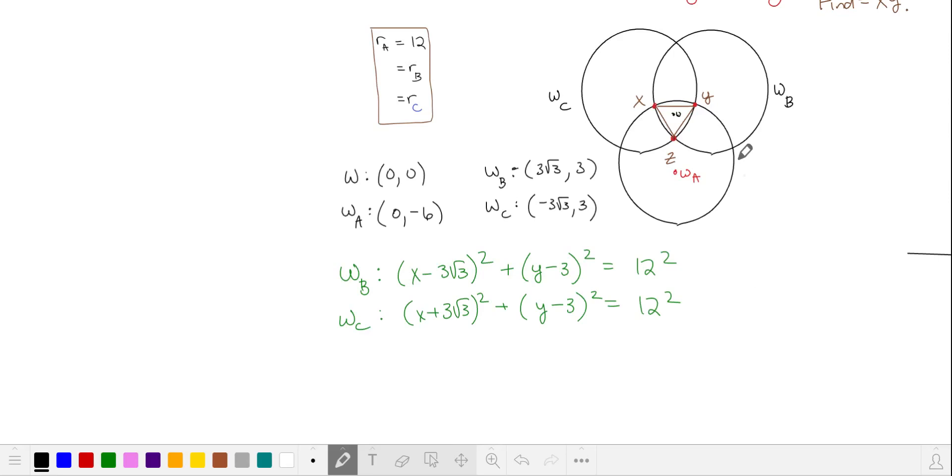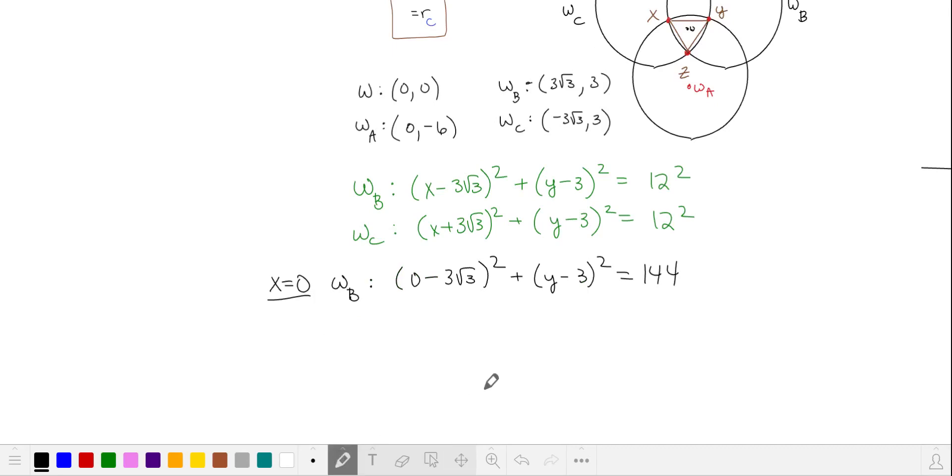We'll save ourselves a little bit of time by noting that the x-coordinate of z is also 0. So we can find the solution for these two circles when x is equal to 0. Let's use circle b. And we'll solve for y.